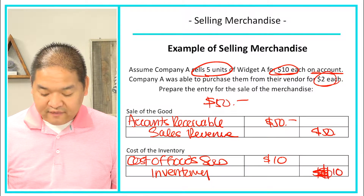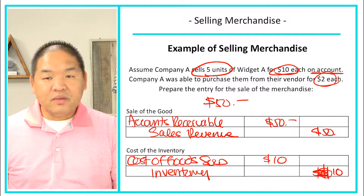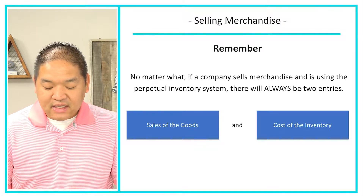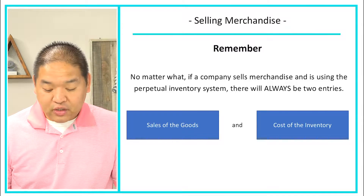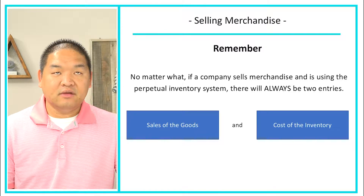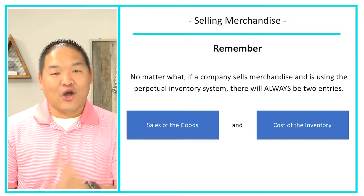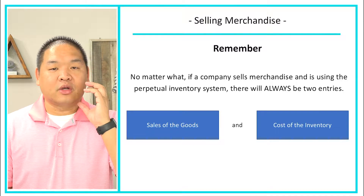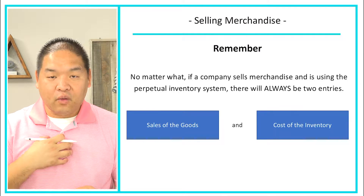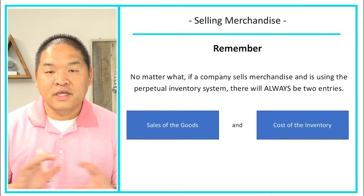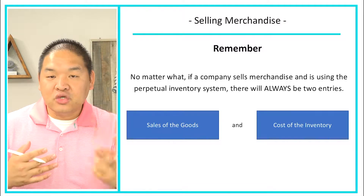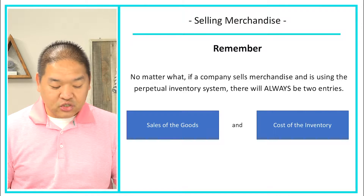That gives us a profit of $40 — if we sold it for $10 and it cost us $2, we make $8 a unit, and five times $8 is $40. Revenues of $50 minus expenses of $10 equals $40. As a reminder: whenever a company sells merchandise using the perpetual inventory system, there will always be two entries — the sale of the goods and the cost of the inventory, also called cost of goods sold. These two entries apply every time a sale is made.